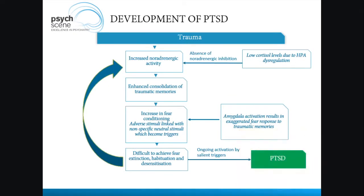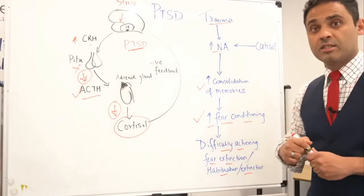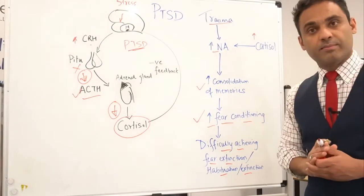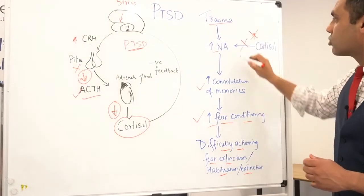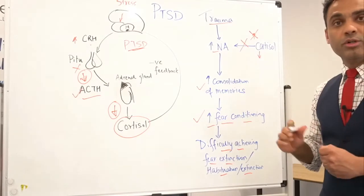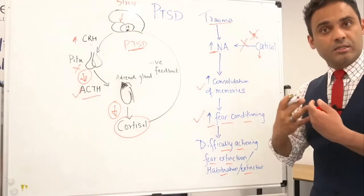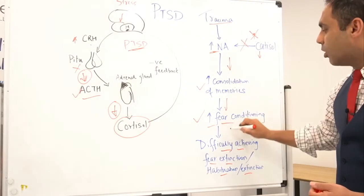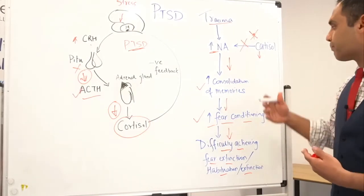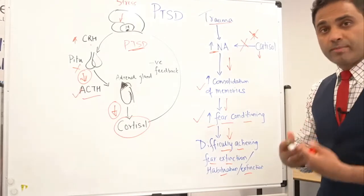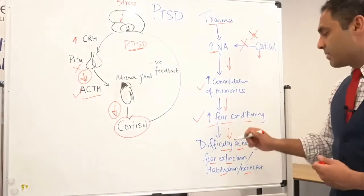This increased fear conditioning results in difficulty achieving fear extinction. Habituation and extinction are important aspects in reducing hyperarousal and in the treatment of post-traumatic stress disorder. Normally, the body would try to reduce noradrenaline by increasing cortisol, but we know that in PTSD there is decreased cortisol. This results in unopposed noradrenaline release, which exacerbates the whole process — making it more likely for the individual to have enhanced consolidation of traumatic memories, increased fear conditioning, and difficulty achieving fear extinction.